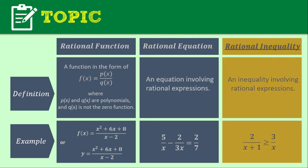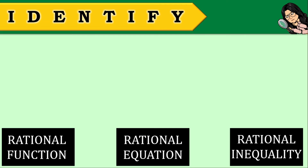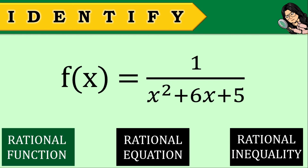Let's compare the three main terms. You can pause this part of the video to look at the definition and examples. Now, let me have some items to identify. Identify if the one being shown is a rational function, a rational equation, or a rational inequality. First item — this is an example of a rational function. Why? Because you have f(x) and the ratio of p(x) over q(x), where p(x) = 1 and q(x) = x² + 6x + 5.